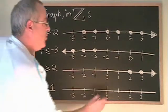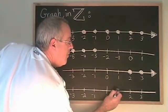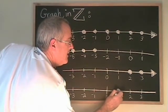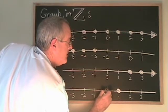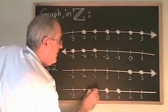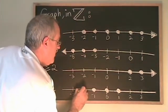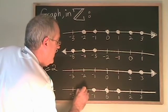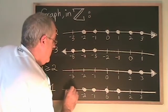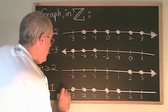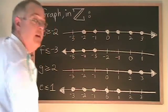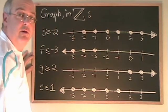E less than or equal to 1. 1 is equal to itself, so it's part of the answer. 0 is less than 1, and all the negative whole numbers are less than 1, so they are part of the answer going on and on forever in the negative direction.